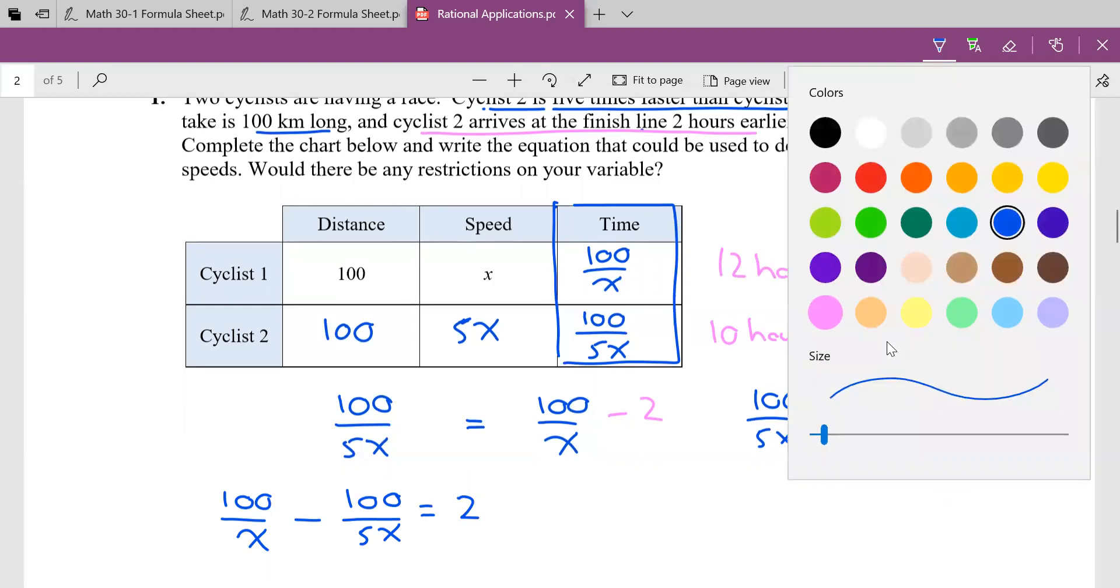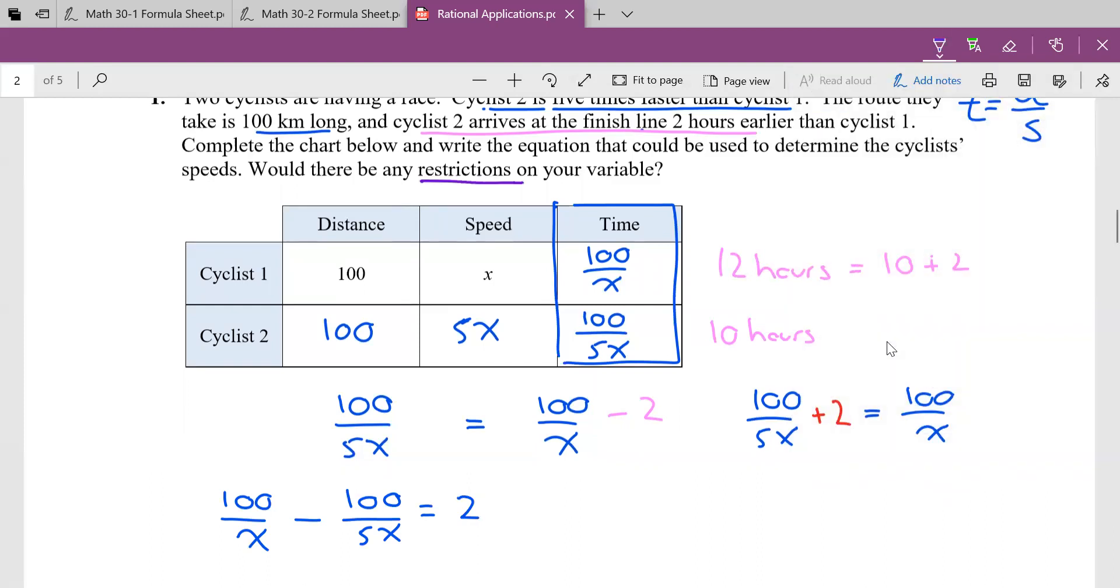Now, what does it say? It says complete the chart, done. Write the equation. Yeah, we wrote three equations. We're awesome. Okay, restrictions. Well, restrictions are this. This is speed. X is speed. Well, what I know if I'm riding my bike, I have to be faster than zero because this is speed. So my restriction for this question is X has to be greater than zero. There's my restriction. So three different equations you could have written or any one. You just need one really. And then you need your restrictions.